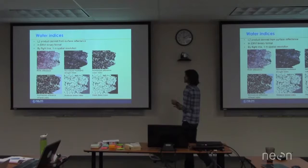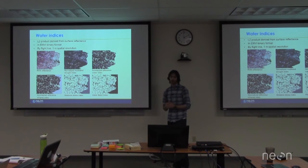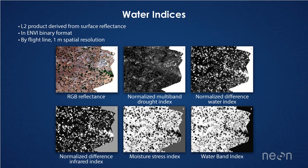Next, we've developed water indices. This is also an L2 product derived from the surface reflectance. Currently in Envy binary format, but we're switching over to GeoTIFF. This is by flight line at one meter spatial resolution. You can see the sort of true color image at the beginning there, and then all the different water indexes. This is to help you figure out things like water stress or drought, what's happening with the vegetation.